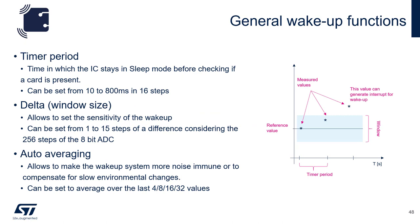There are general wake-up functions associated with both capacitive and inductive wake-up. The timer period is how often the system wakes up to see if there's a change, and can be set anywhere from 10 to 800 milliseconds in 16 steps. The delta window size sets the sensitivity of the wake-up, from 1 to 15 steps of difference of a 256-step 8-bit ADC — essentially defining how far a measured value has to be from the reference value to produce a wake-up. Auto-averaging can be used to compensate for slow environmental changes, such as rain on glass affecting capacitance, and can be set to average over the last 4, 8, 16, or 32 values.